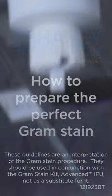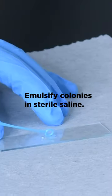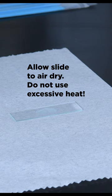How to prepare the perfect gram stain. Apply the test microorganism to a clean glass slide. Emulsify colonies in sterile saline. Allow slide to air dry.